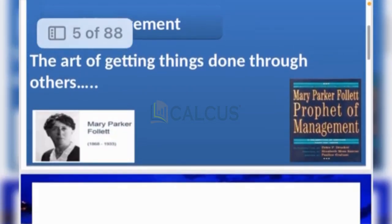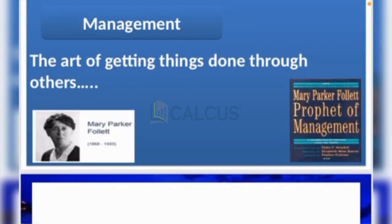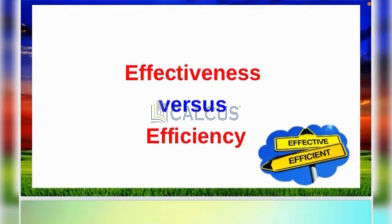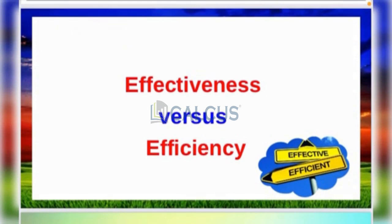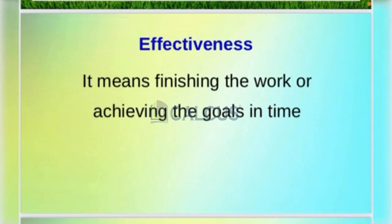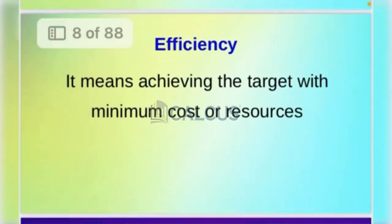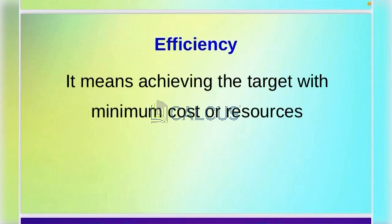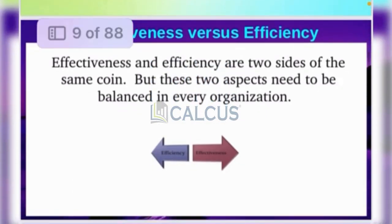Let's learn how management is a feature and how management is defined. Management is the art of getting things done through others — that is the definition by Mary Parker Follett. The difference between efficiency and effectiveness is important: effectiveness means achieving the right targets, while efficiency means achieving them with minimum cost and resources.